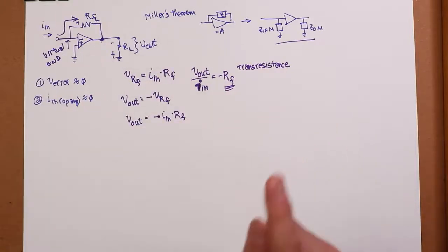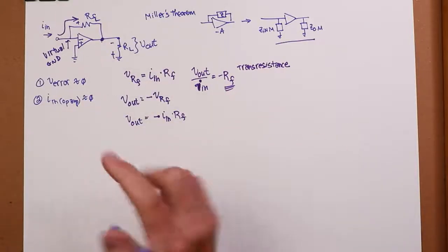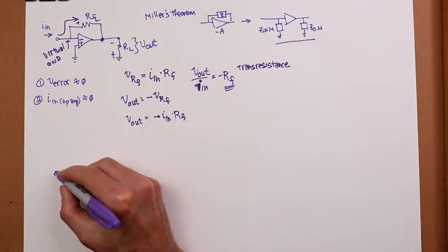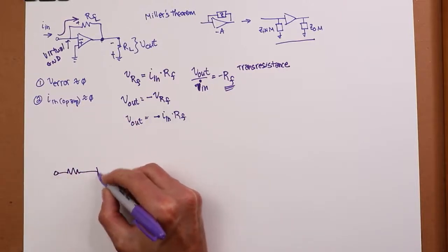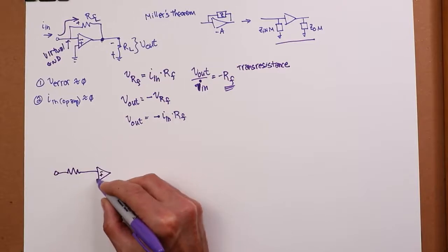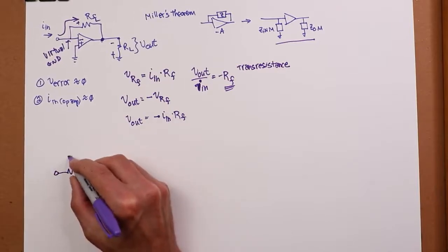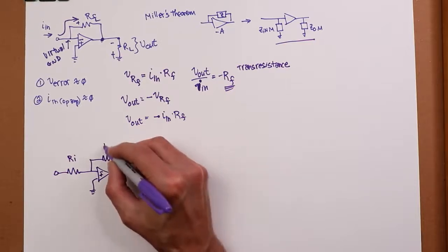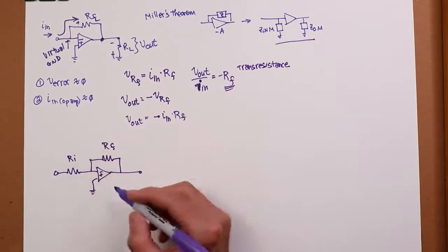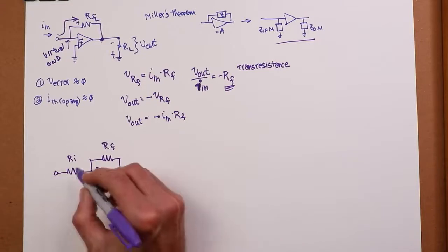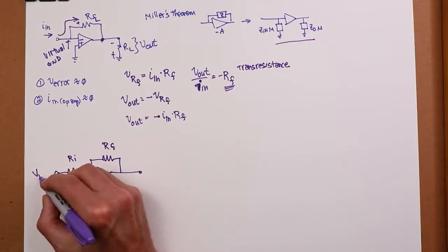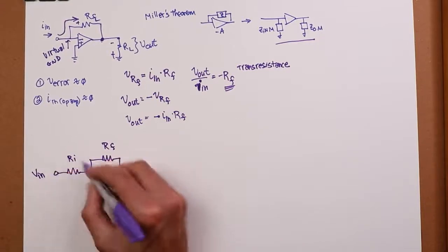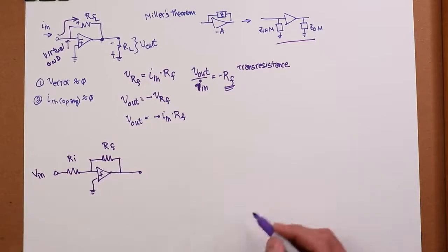However, it turns out to be doubly handy if we just add an input resistor to it, like so. Now, what's going to end up happening is all of our input signal, and we're going to put a voltage out here now, all of that voltage is going to drop across RI, and that's what's going to create IN.